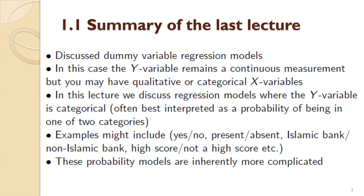Examples of those two categories include yes or no, present or absent. From practical project work I've been involved with: Islamic bank or non-Islamic bank, high score or not a high score. Usually you have two categories and you want to calculate the probability of being in either category dependent on your X variables. More realistic examples from research tend to be more interesting than the standard textbook yes/no examples. These probability models are more complex than what we've seen before.